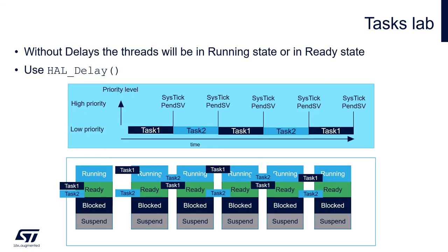Let's analyze what happens if we don't use osDelay. Both tasks will be either in running or ready state — no blocked state and no space for the idle task since it has lower priority. Task one starts executing for a given time slice, usually one millisecond, configurable in FreeRTOSConfig.h. Then SysTick triggers PendSV, which switches context from task one to task two.